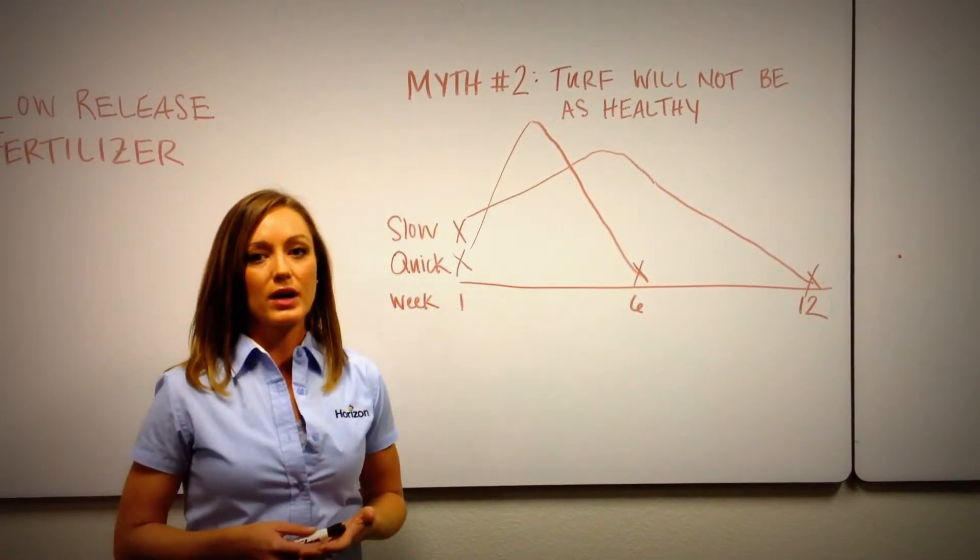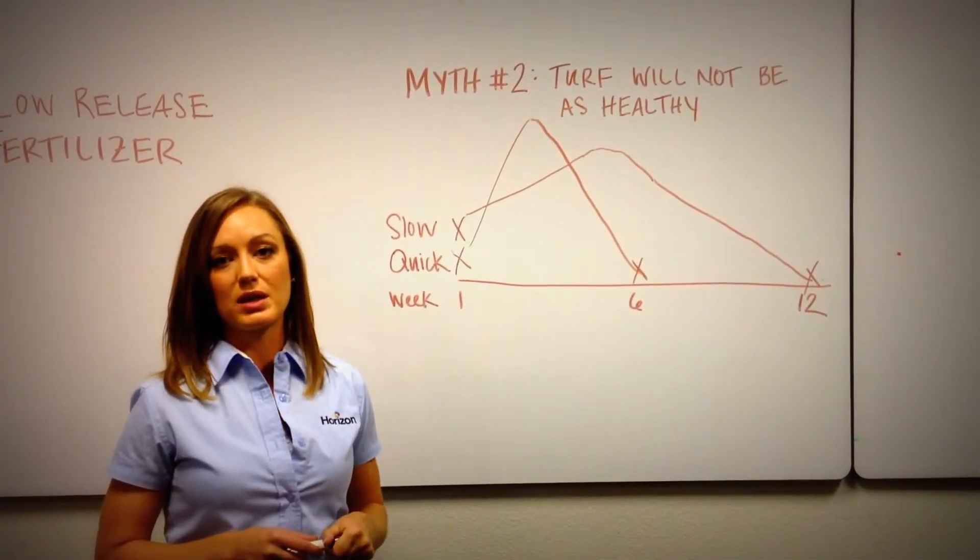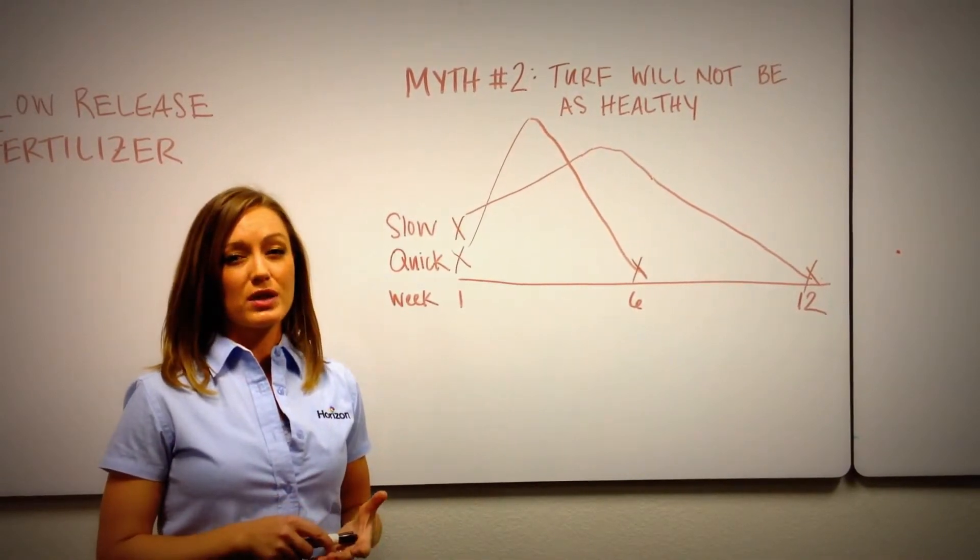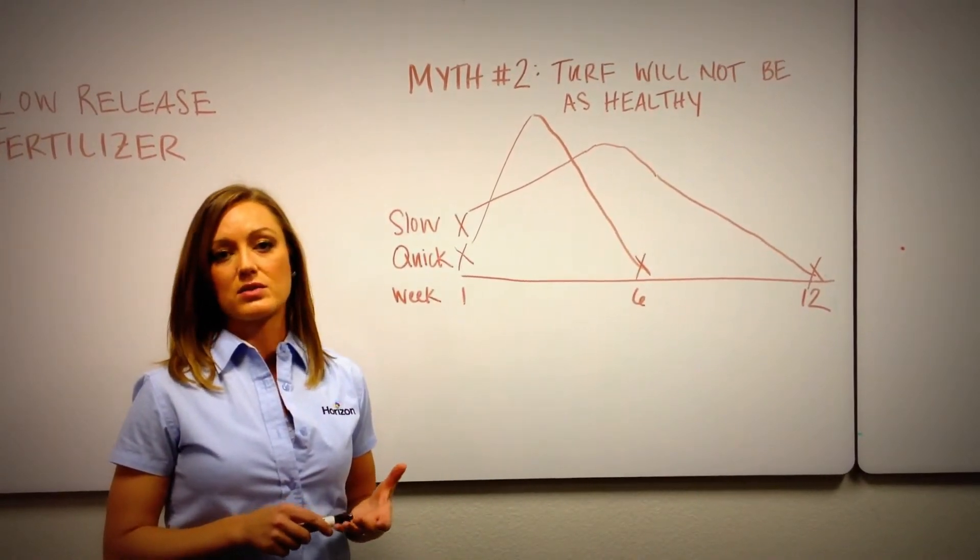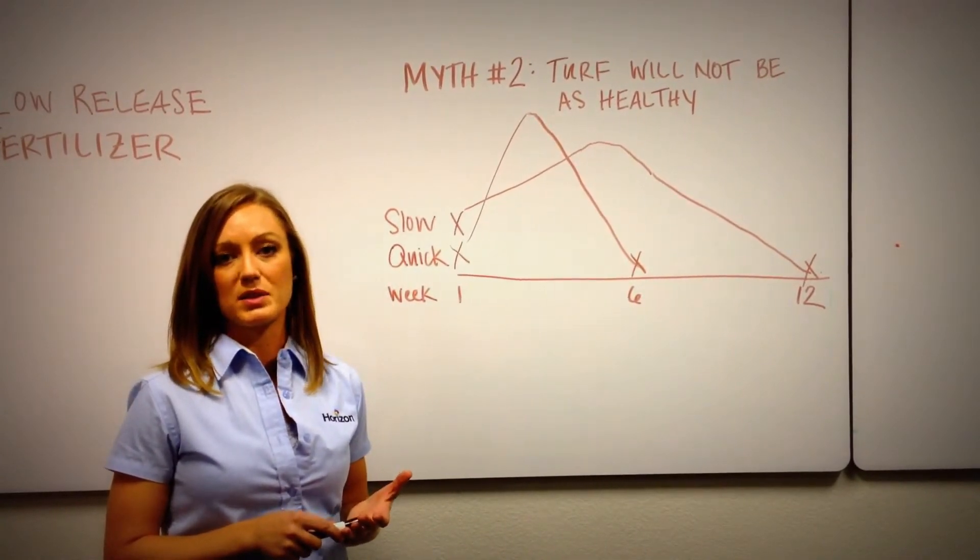And the other downside with having a crash like that or with the overproduction of shoot growth at the beginning is that much like fertilizing in the wrong periods of the year, it's causing the turf to overproduce shoot growth and they can only do that at the expense of the roots.